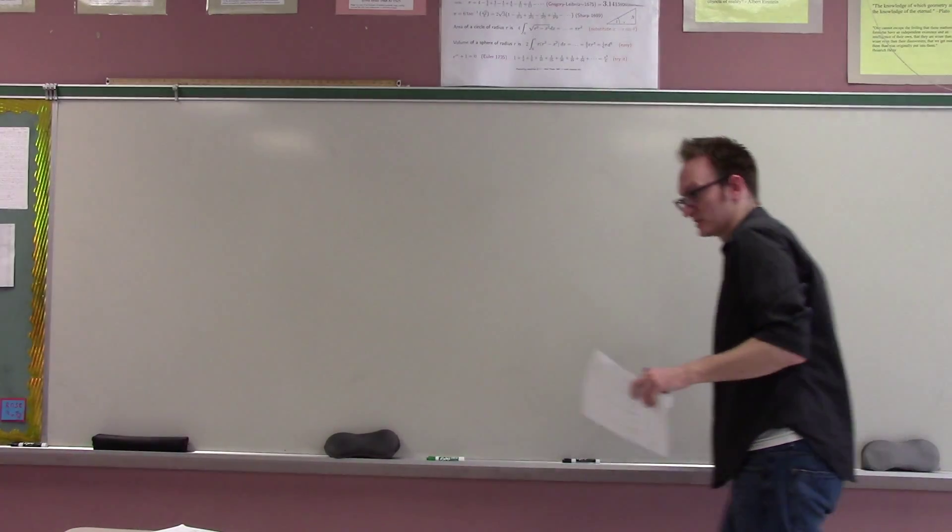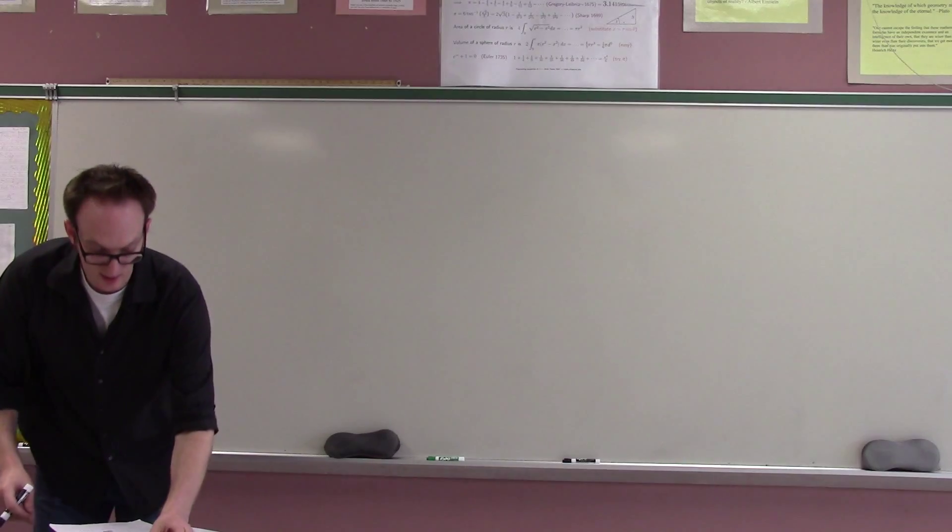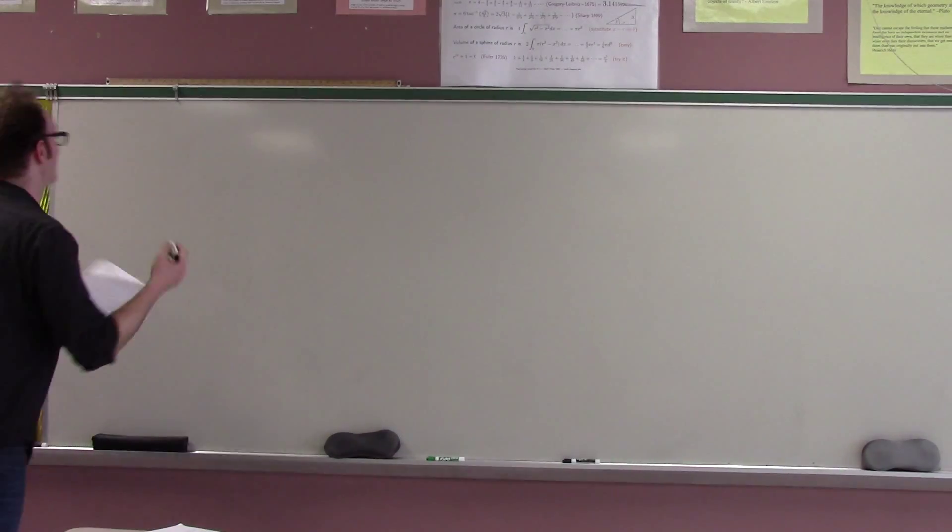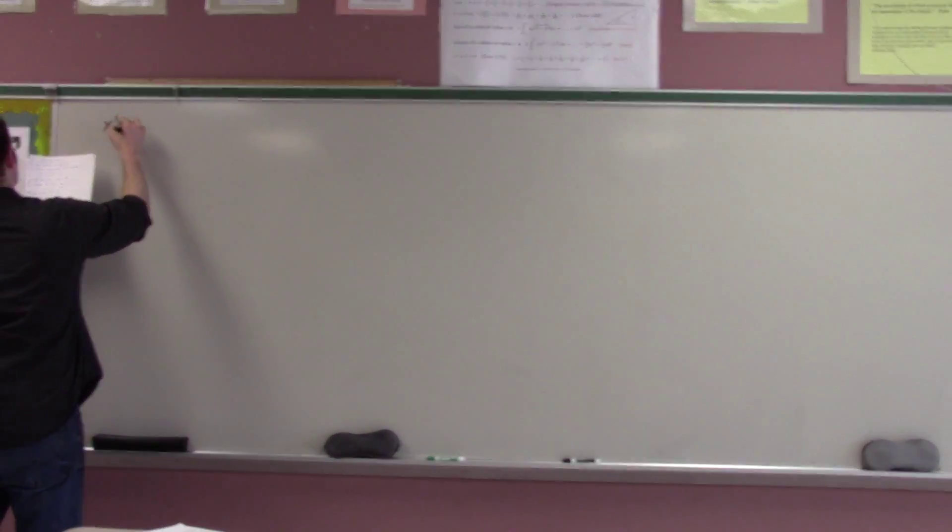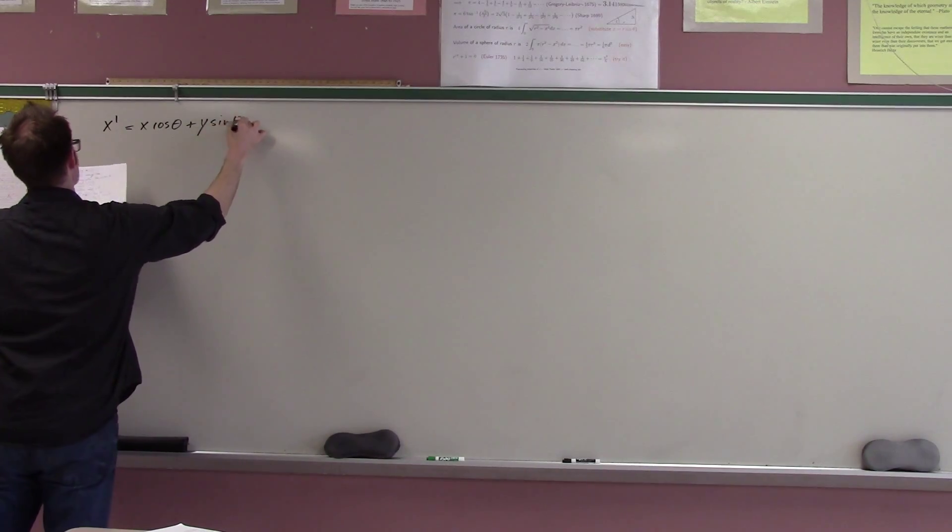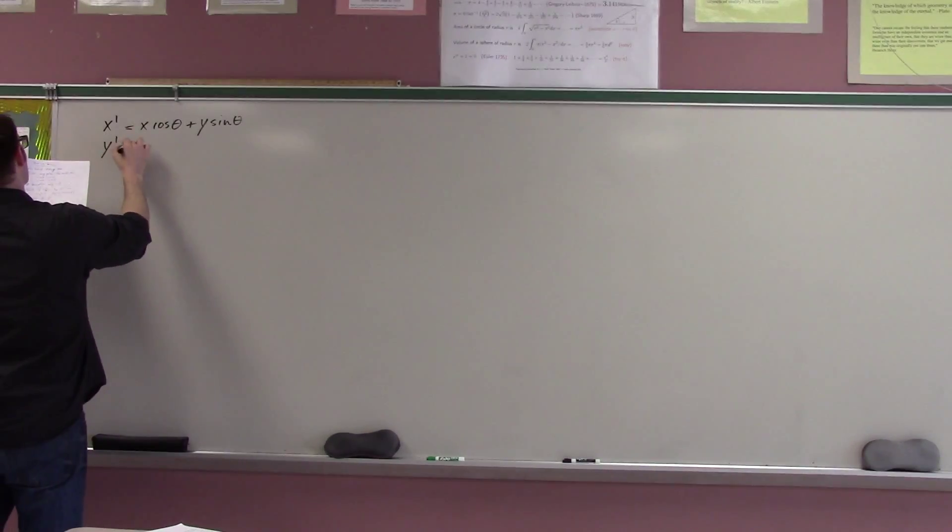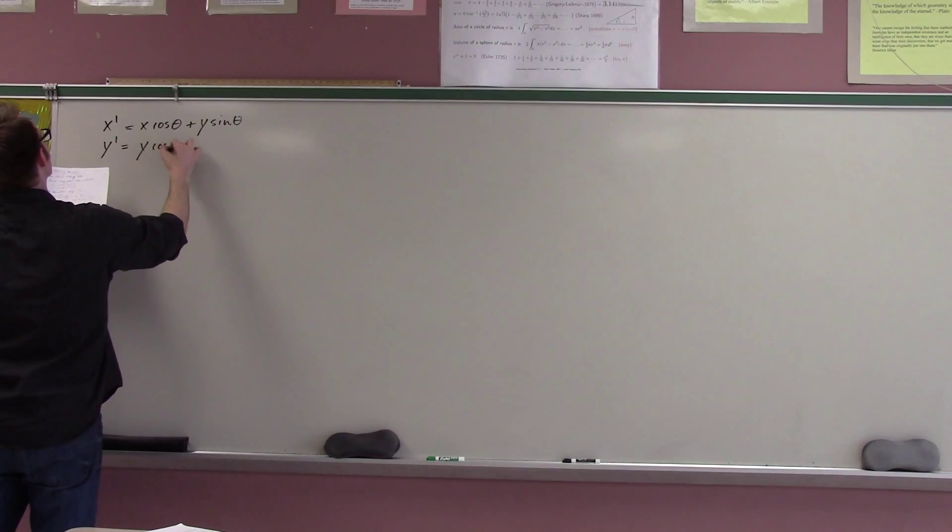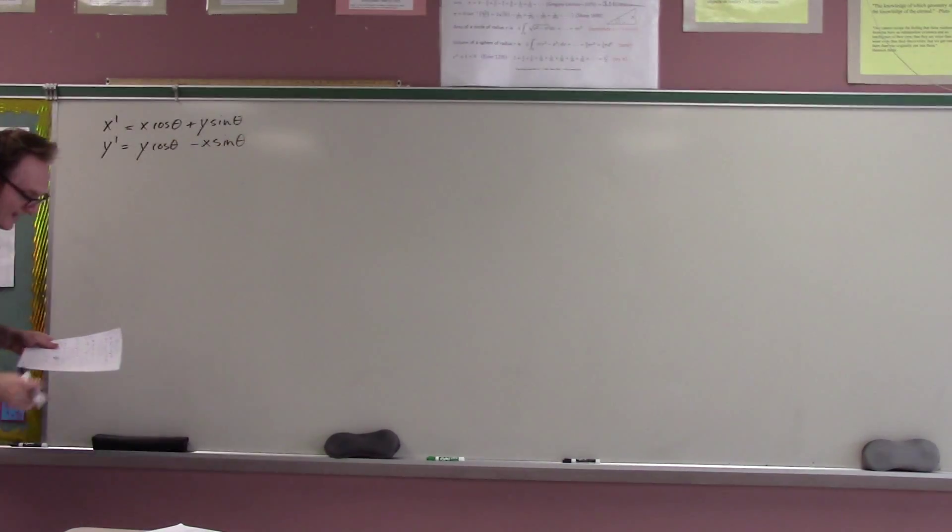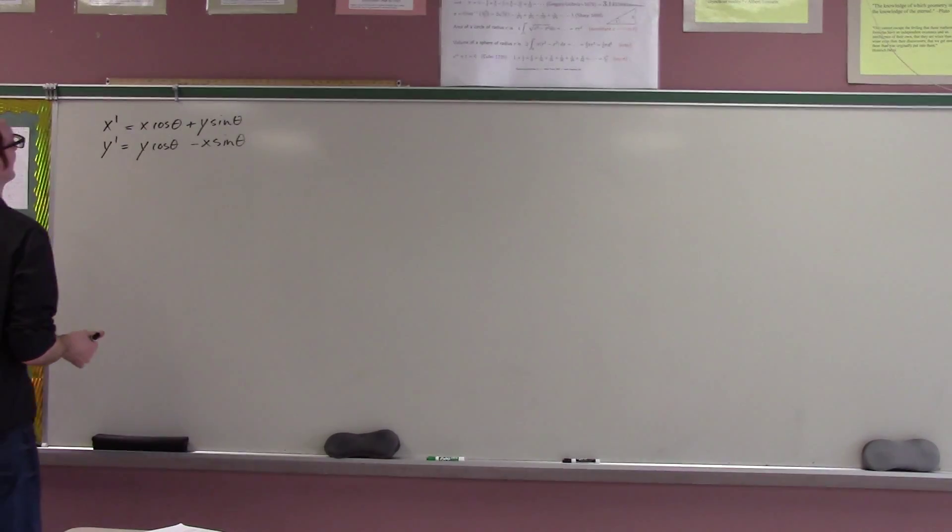Okay, so, we take the equations that we had a minute ago: x prime equals x cosine theta plus y sine theta, and y prime equals y cosine theta minus x sine theta. And now we basically just do some algebra, right? So, solve for x and y out of all of this.